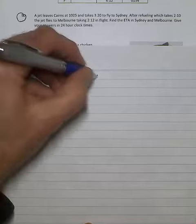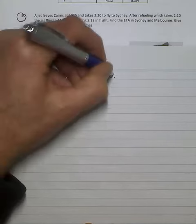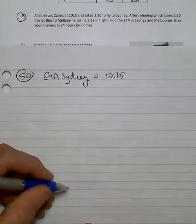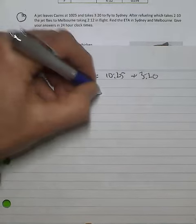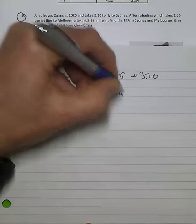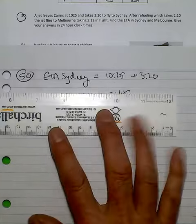Now the ETA Sydney is 1025 when they left Cairns. They take 3 hours 20 to get to Sydney, so 1345 would be the estimated time of arrival at Sydney.